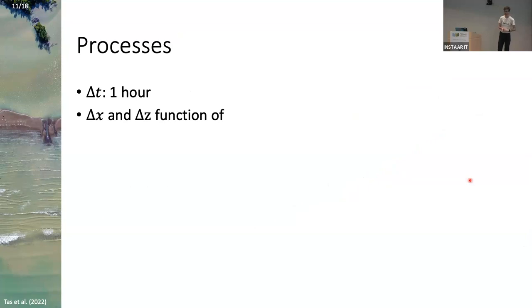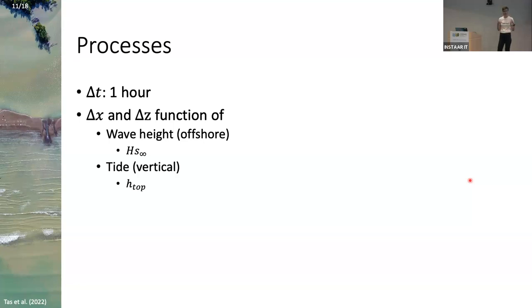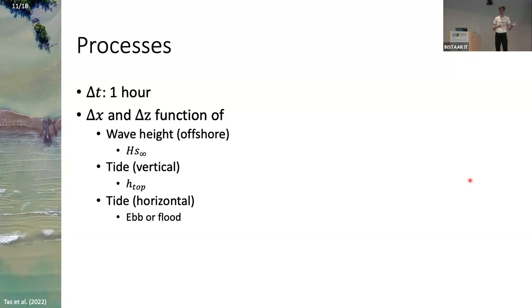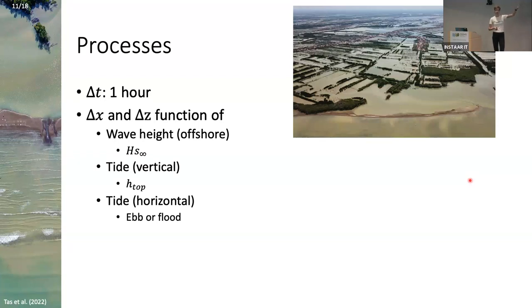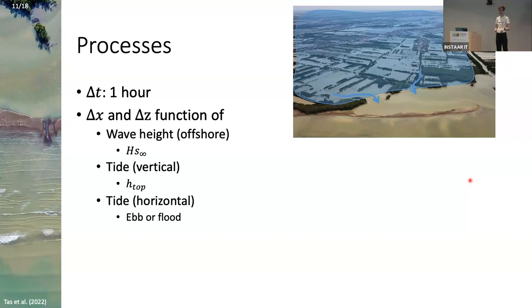That delta x and delta z is an hourly migration rate, and it's a function of the offshore wave height — since waves most often drive sediment transport — and also of the tide. The tide plays a vertical role, determining whether the chenier is submerged and how high the water is on top, represented by h_top. It also has a horizontal effect through currents — ebb or flood determines direction. What used to be a coastal plain is now flooded by each tidal cycle. During ebb, all that water needs to flow out through a couple of narrow channels, encountering friction from mangrove trees, houses, and old structures, which slows down the flow during ebb.